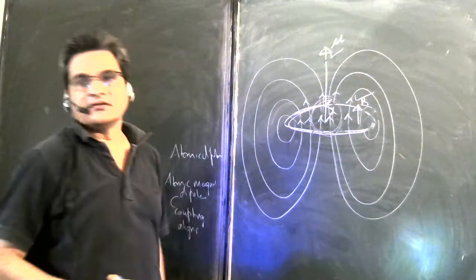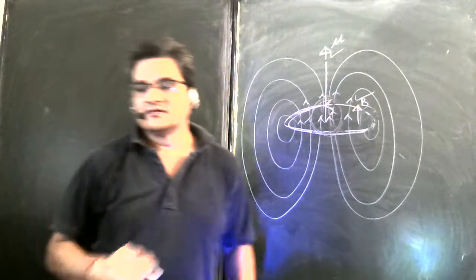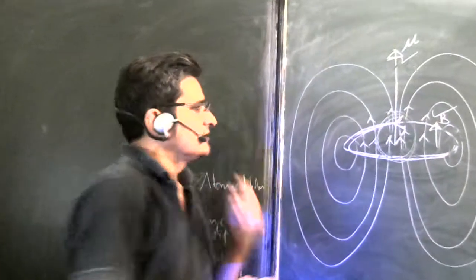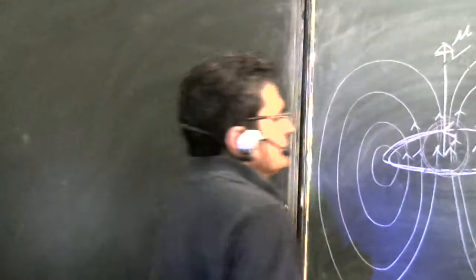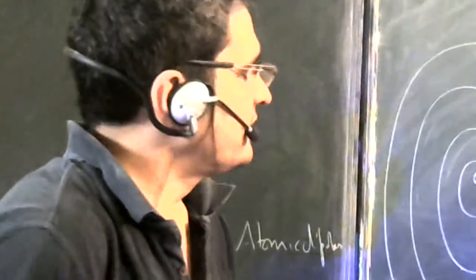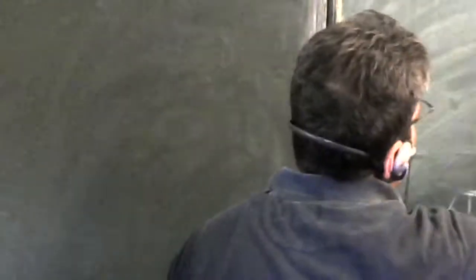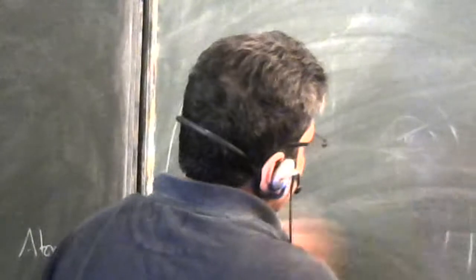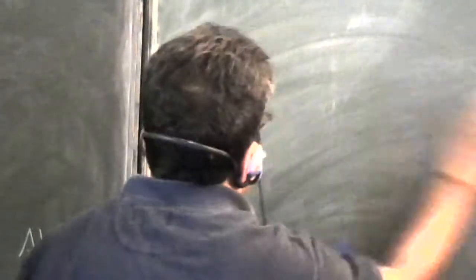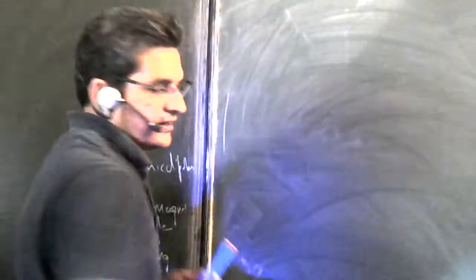So both B and μ (mu) are in the same direction inside the magnetic dipole. This is just the opposite compared to the electric field and the electric dipole, where E and P are in opposite directions at the center of the dipole.